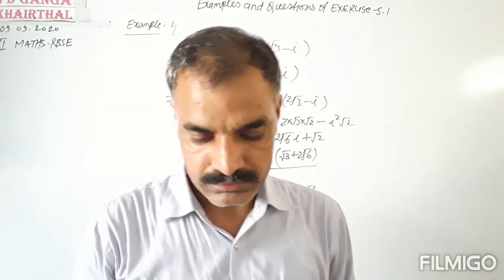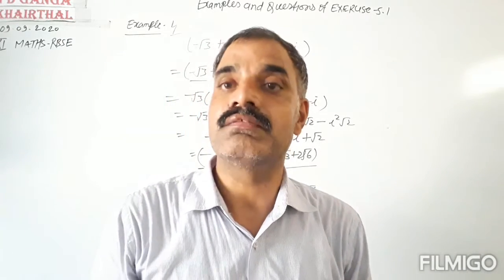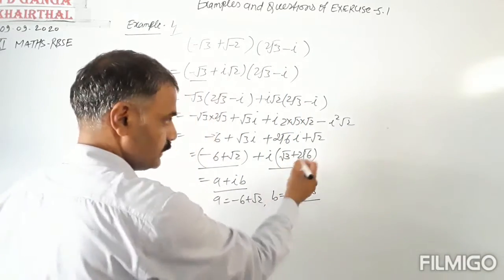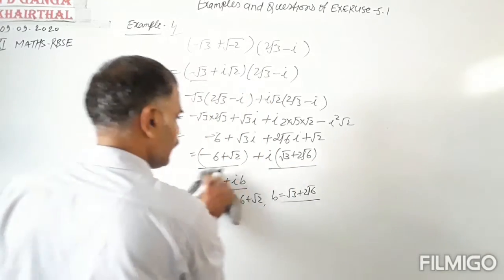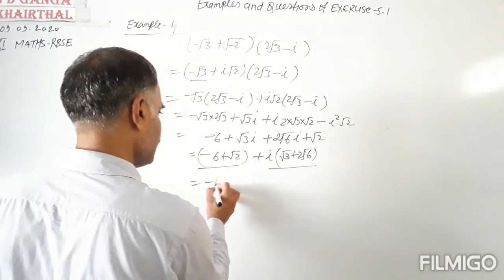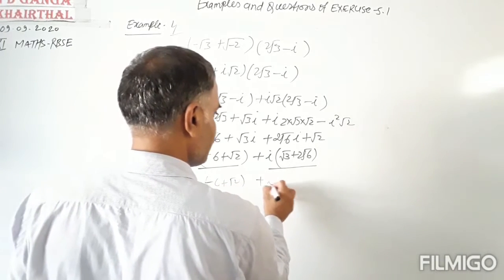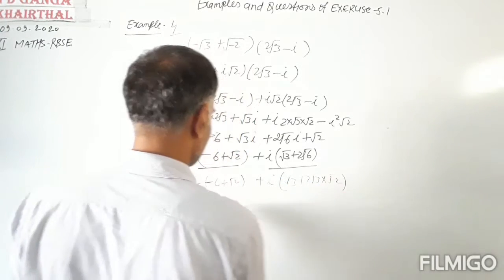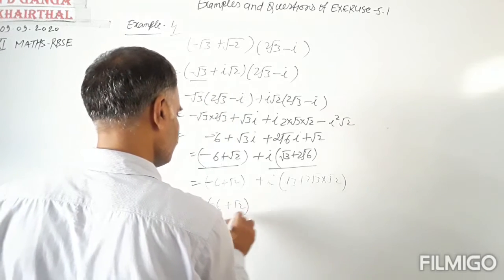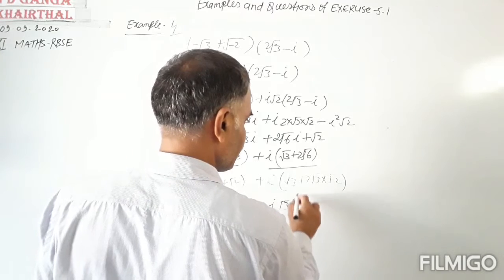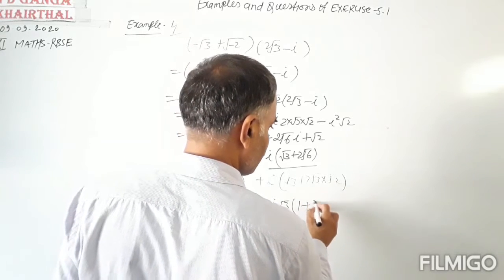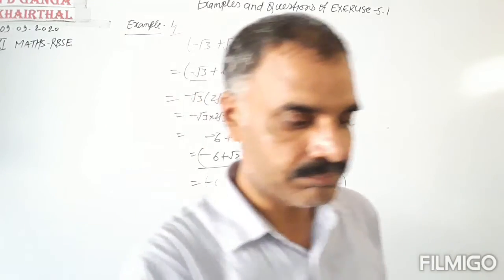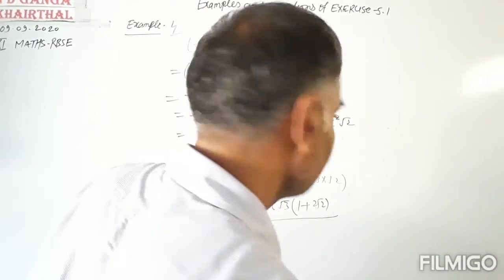This can also be factored as (−6 + √2) + i·√3(1 + 2√2). Both forms are the same. Now taking Example 5: find the multiplicative inverse of 2 − 3i.